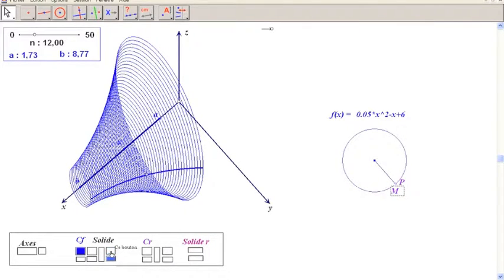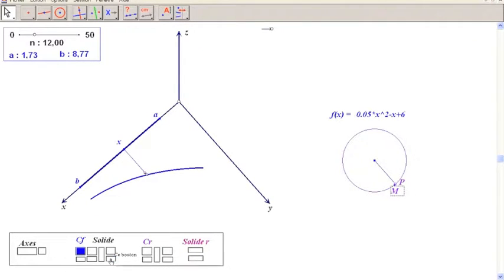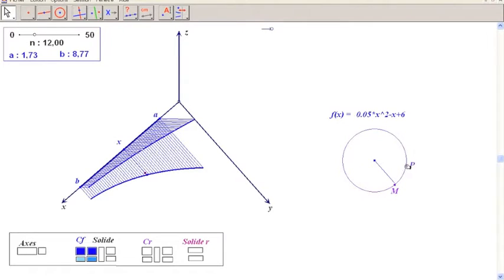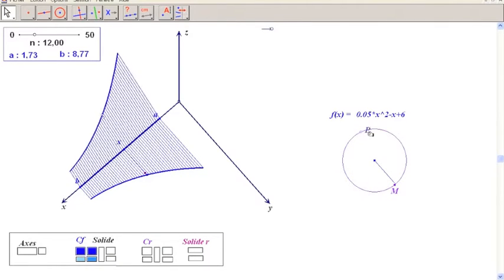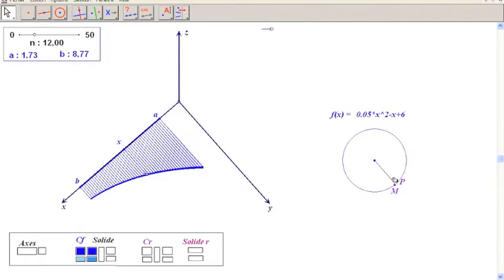We want to evaluate the volume of such a solid, to approximate it, and the idea is this one. If we rotate like this, we generate the previous solid. But in order to generate an approximation of this solid, we will create first, as we did before,